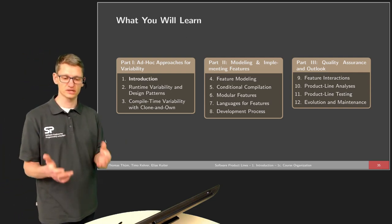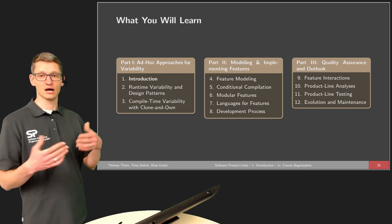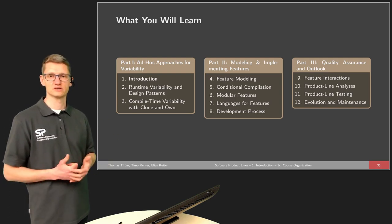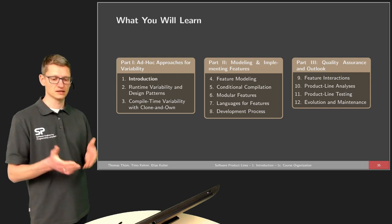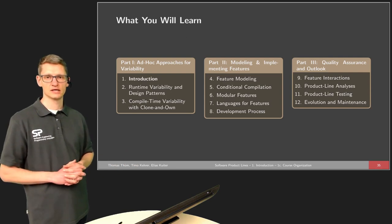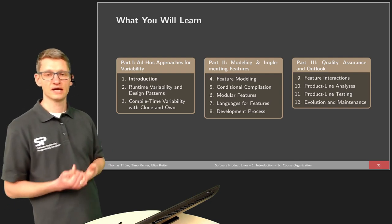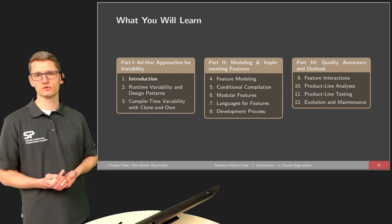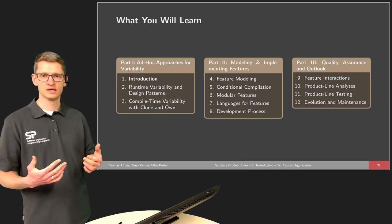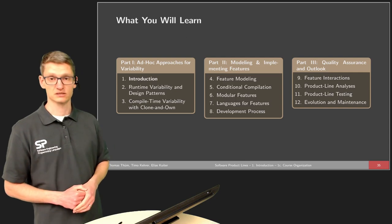We will discuss some techniques like runtime variability, how design patterns can be used to express variability, how compile time variability can be used in terms of clone and own. We already talked about clone and own in the challenges part in the last part, and clone and own is that technique that is discussed in the complete third lecture in more detail. We recognize that runtime variability but also clone and own have their limitations, and both is not what we want.